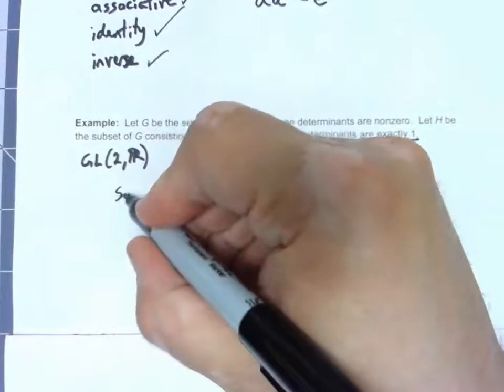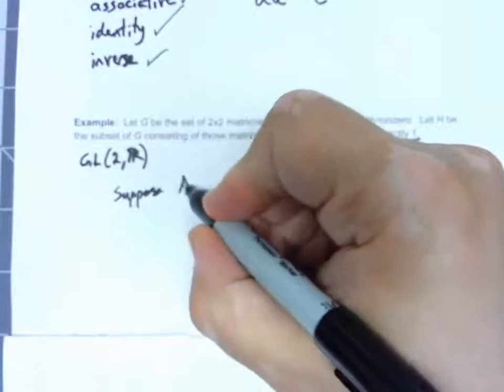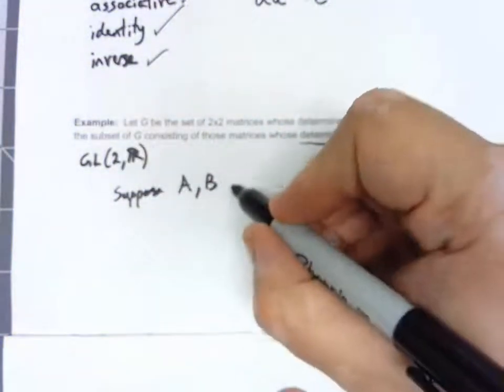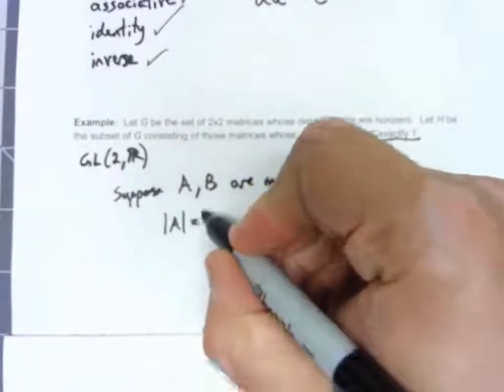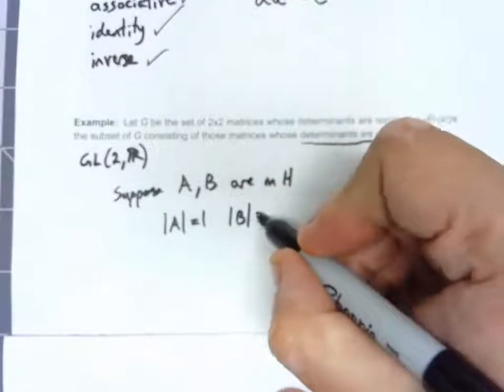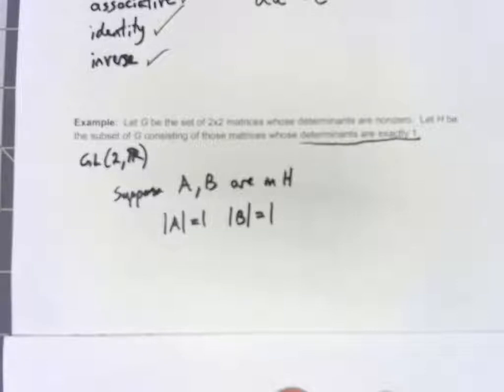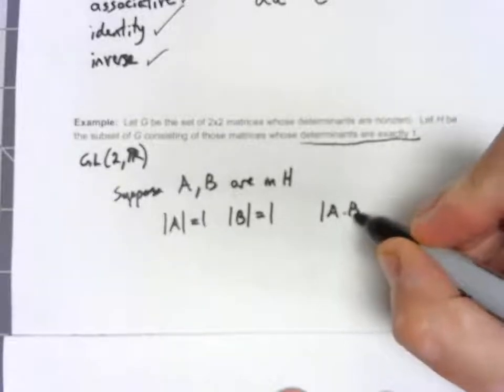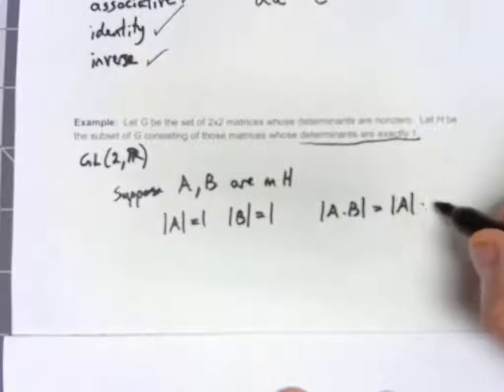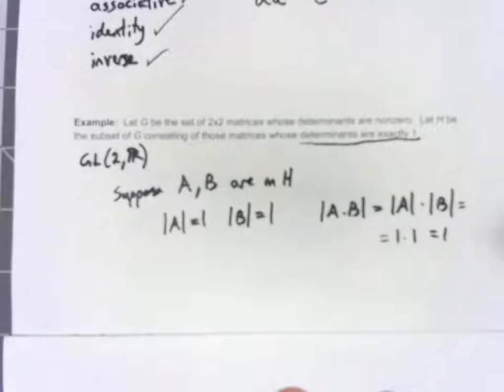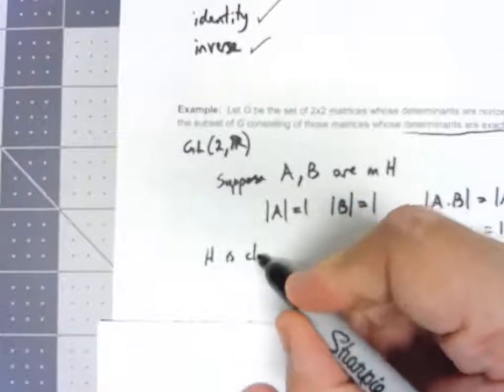So, suppose two matrices A and B are in H. That means the determinant of A would have to be one, and the determinant of B would have to be one. But, by the properties of determinants, the determinant of A times B is the determinant of A times the determinant of B. So, that would have to be 1 times 1, which would be 1. So, if A and B are in H, so is A times B. So, H is closed under the operation.